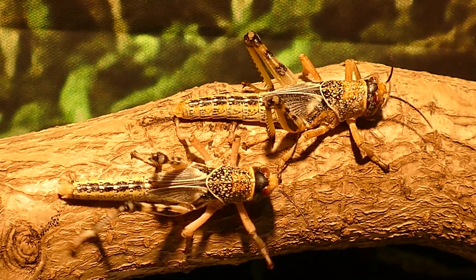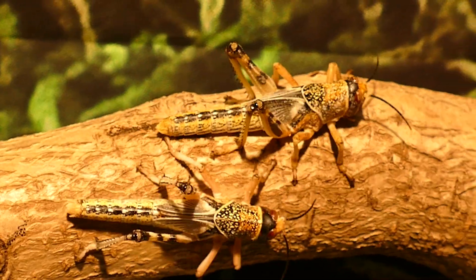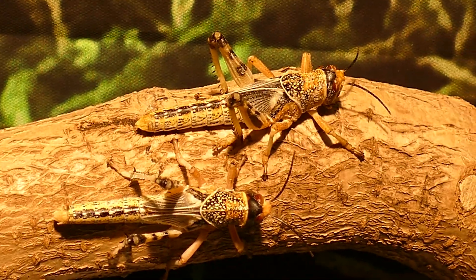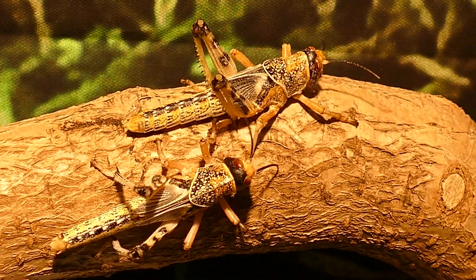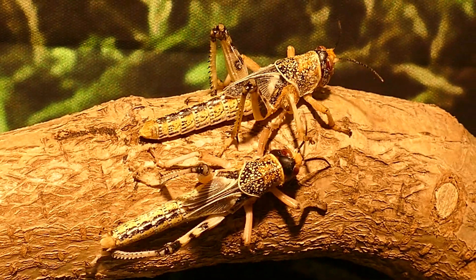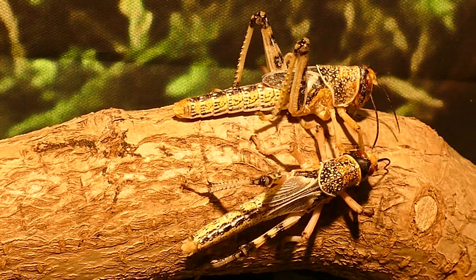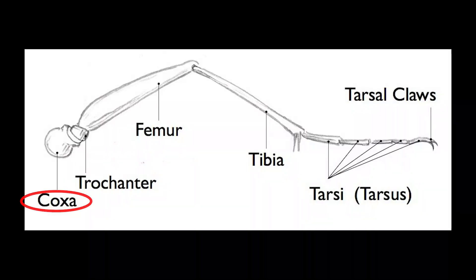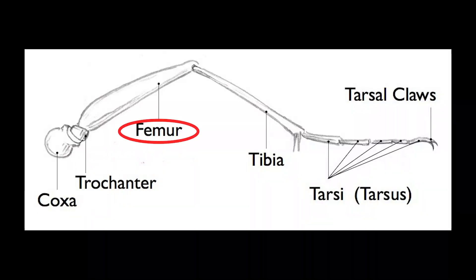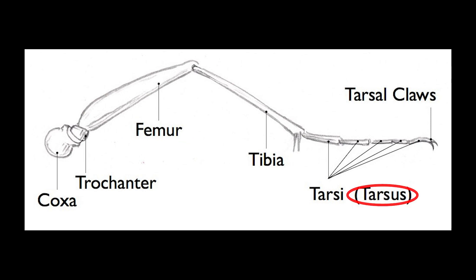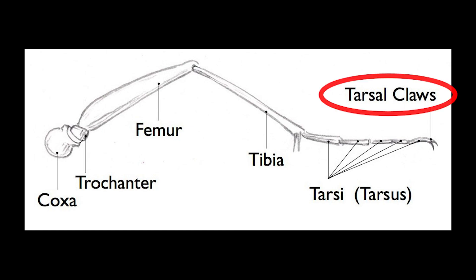Insects have three pairs of legs, with each leg following the same basic structure. The five leg parts of an insect from the body outwards are the coxa, the trochanter, the femur, the tibia, and the tarsus. Like the antennae, the tarsus is divided into sub-segments called tarsomeres, ending in a pair of tarsal claws.